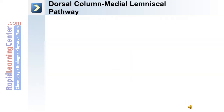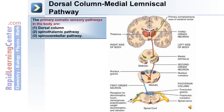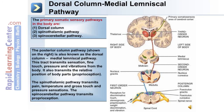There are three primary somatic sensory pathways in the body: the dorsal column, the spinal thalamic pathway, and the spinal cerebellar pathway. The image on the right is an example of the posterior column pathway, also known as the dorsal column medial lemniscal pathway. This tract transmits sensations of fine touch, pressure, and vibrations from the body, as well as the relative position of body parts — proprioception. The spinal thalamic pathway transmits pain, temperature, and gross touch and pressure sensations.